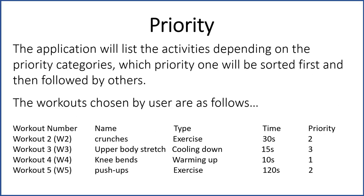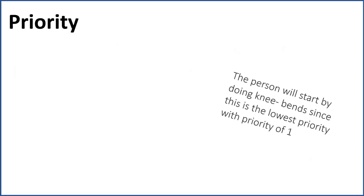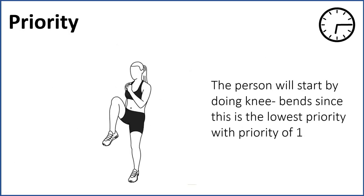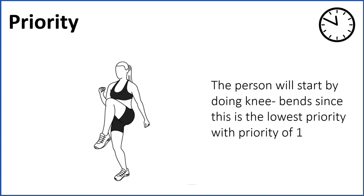Finally, we have priority scheduling. The application will list activities depending on the priority categories, where priority one will be sorted first and then followed by other priorities, which are two and three. The workouts chosen by the user are workout two, workout three, workout four, and workout five. The person will first start by doing knee bends since this has the lowest priority value of one.